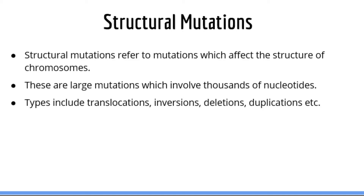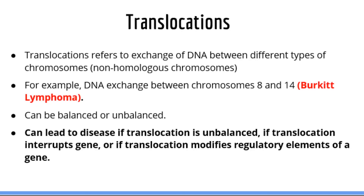The most important type of structural mutations are translocations because they are involved in various human diseases, so we will talk about translocations for the rest of this lecture. Translocations occur when DNA is exchanged between chromosomes that are not of the same type, also known as non-homologous chromosomes. For example, exchange of DNA between chromosomes 6 and 16 would be considered a translocation. Translocations can be either balanced or unbalanced depending on whether the structural change results in a net loss or gain of DNA.